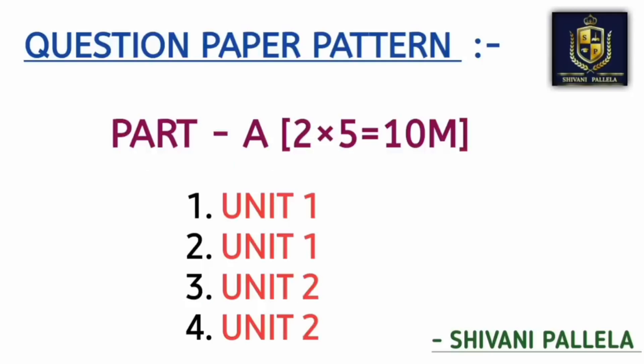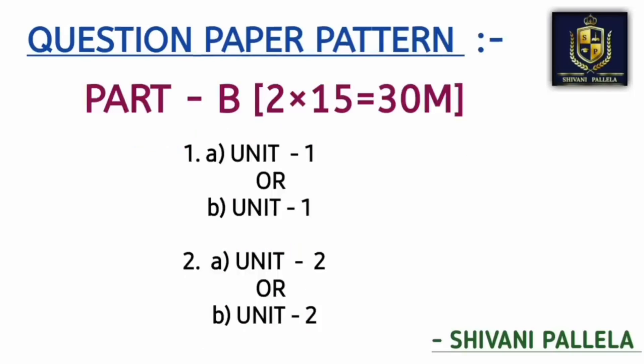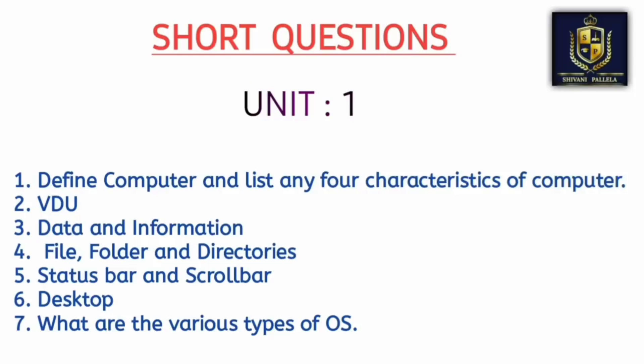Regarding the question paper pattern: in Part A, four questions will be given and you need to attempt two. Each question carries five marks. Questions one and two come from Unit 1; questions three and four come from Unit 2. For Part B, you need to attempt two questions and each will have an internal choice — one from Unit 1 and one from Unit 2.